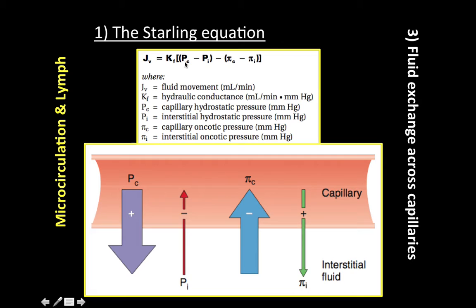One exception to the rule that PC is higher at the arterial end than the venous end is in the glomerular capillaries, where PC is constant.